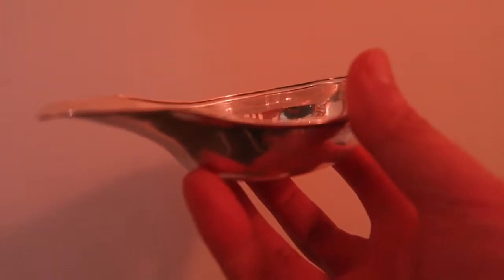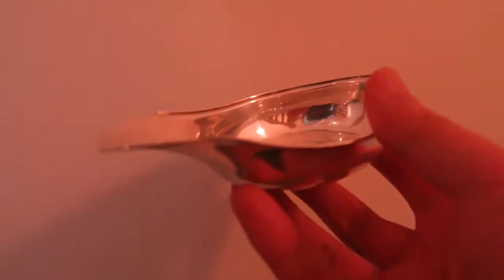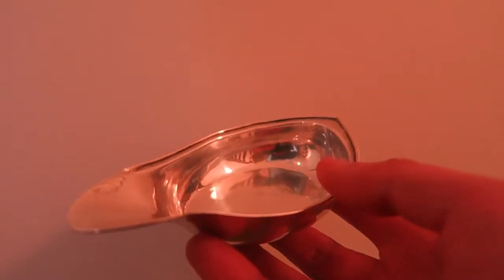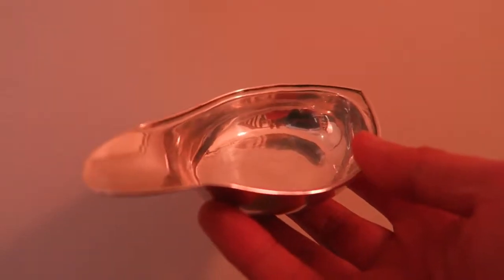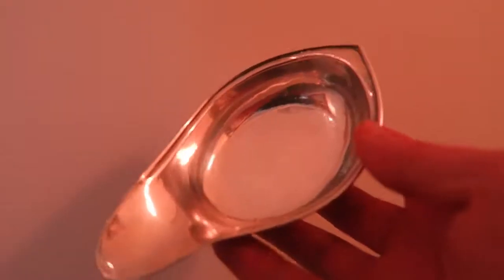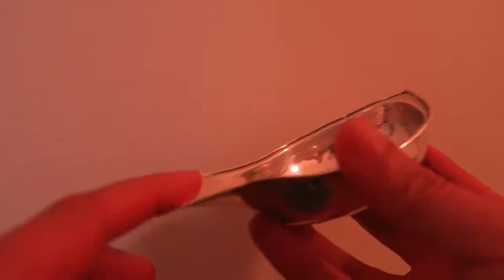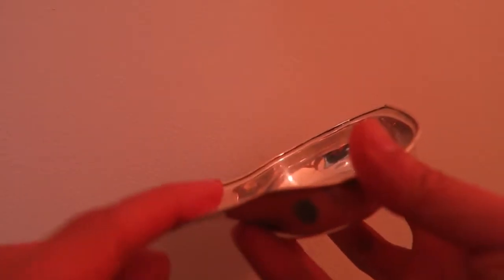By then, it had started to morph slowly into more of an invalid feeding bowl, which is of a very different shape to this. It's more round rather than oval. It has a spout like a teapot rather than a pouring lip like this.